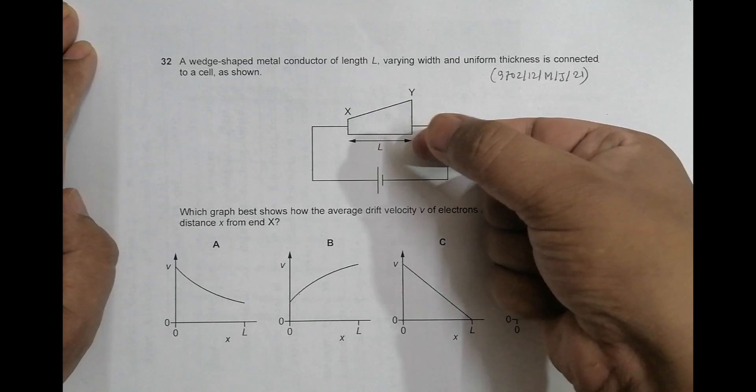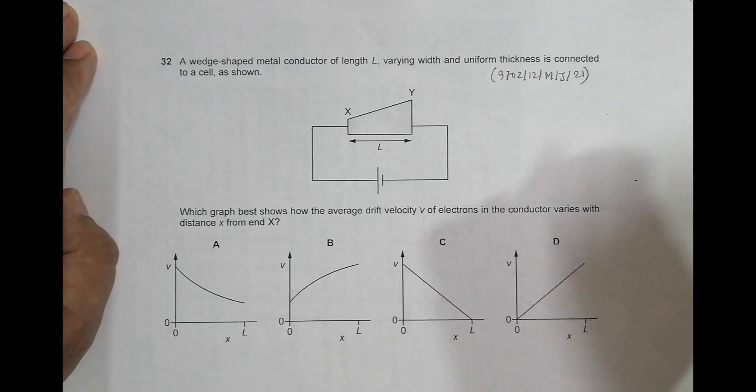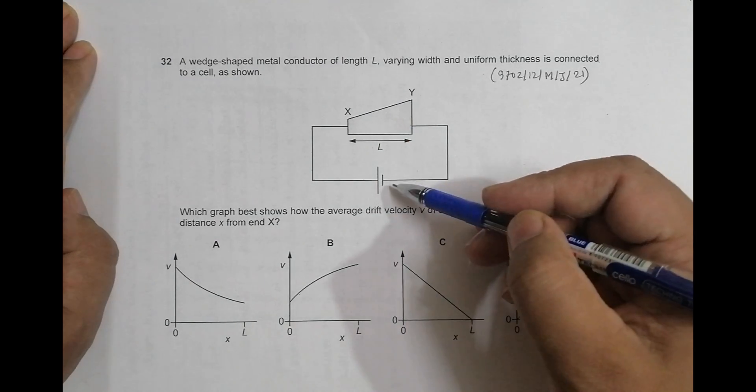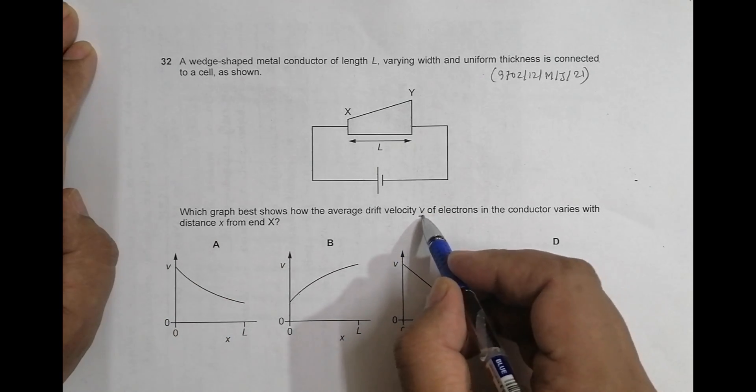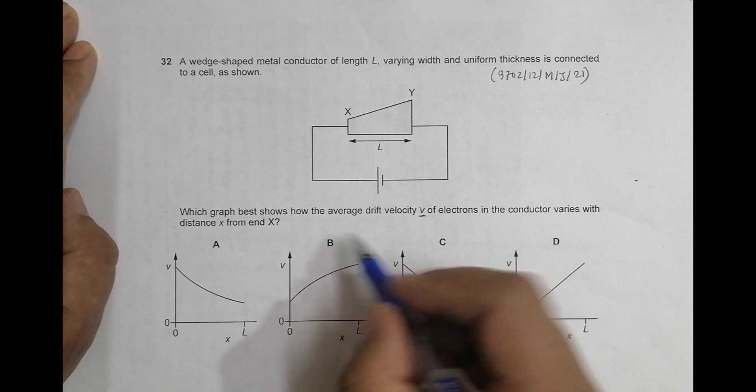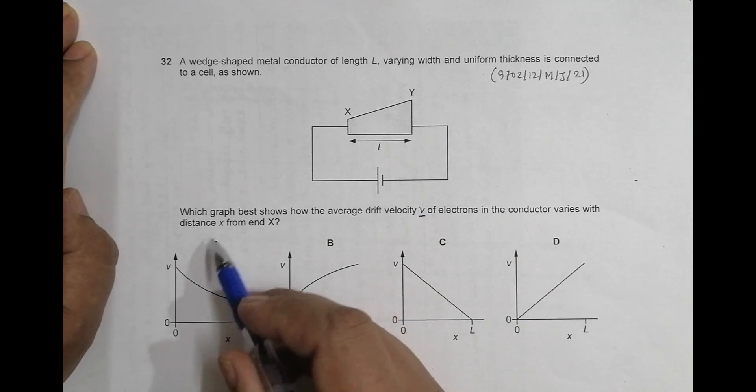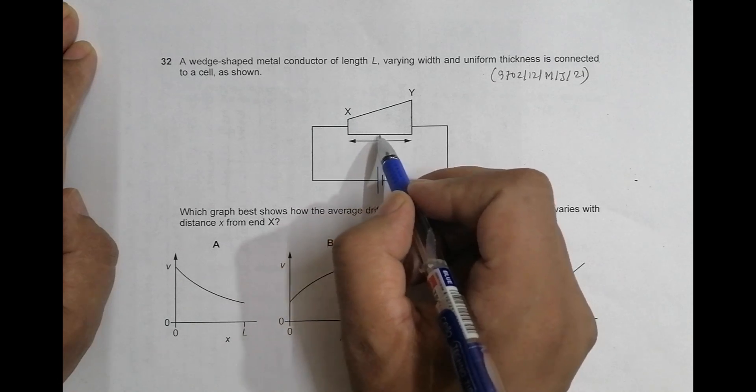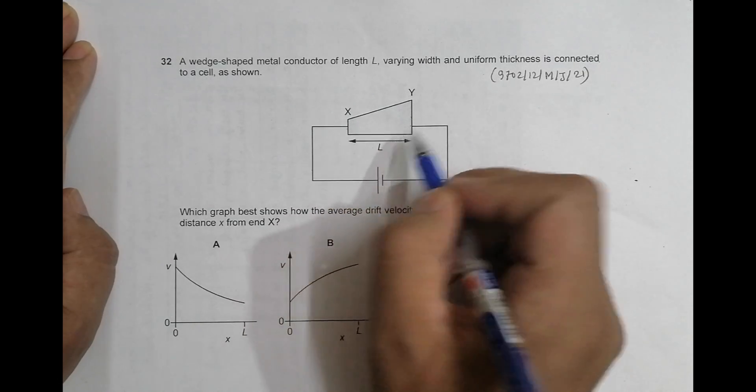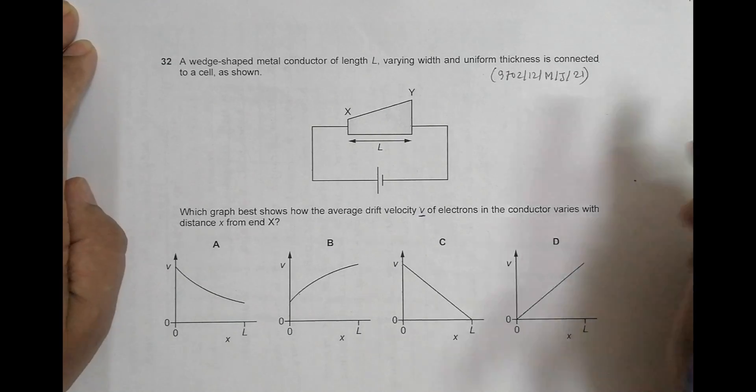Uniform thickness - the thickness cannot be seen here, it is like this. This thing is uniform, is connected to a cell as shown. Which graph shows how the average drift velocity V of the electrons in the conductor varies with distance x, distance x from length L? So from here we have to find the variation of the drift velocity.